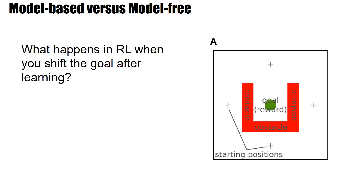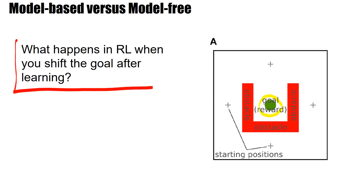This is a maze task where the target is hidden in the middle. The agent has learned how to go there. The question is: what happens if suddenly you change the location of the target? The target is no longer where it used to be — it's now somewhere else.